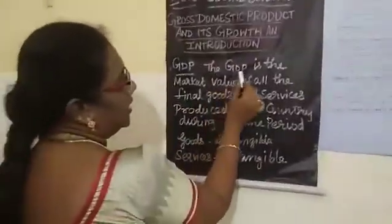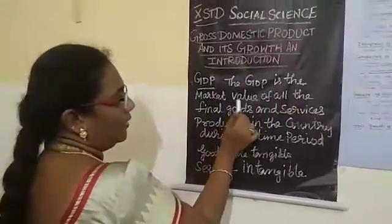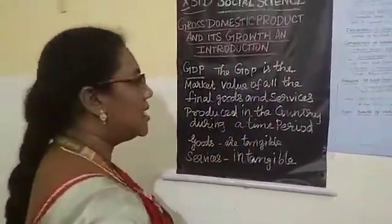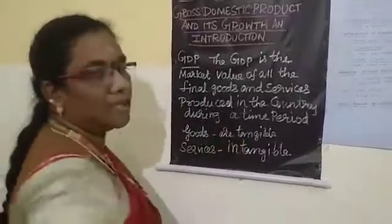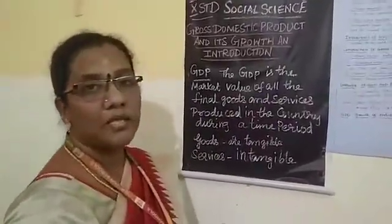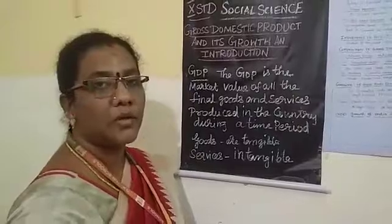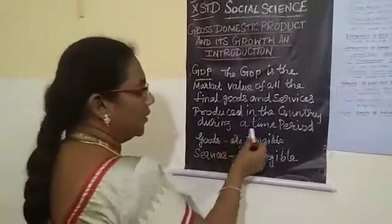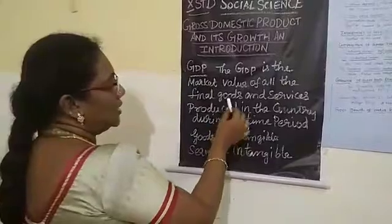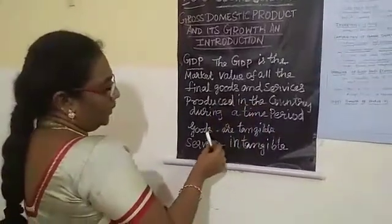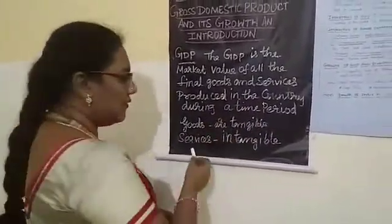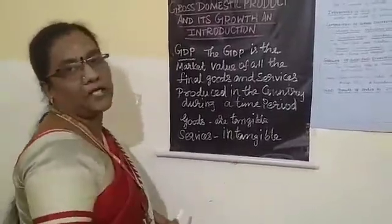GDP is the market value of all the final goods and services produced in the country during a time period. Goods are tangible. Services are intangible.